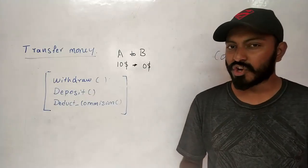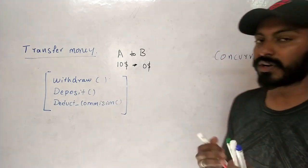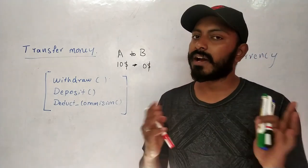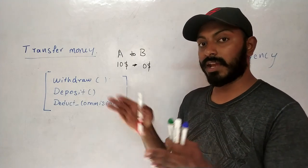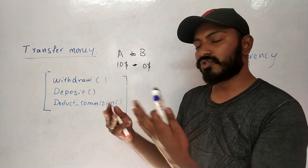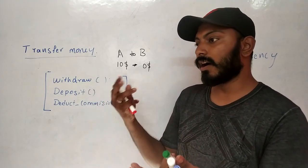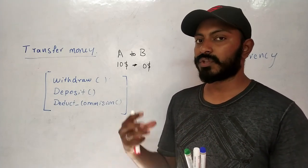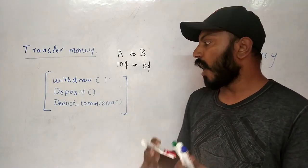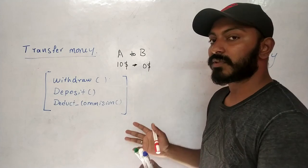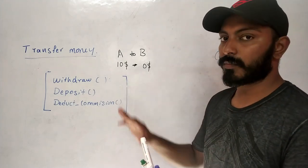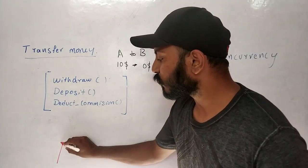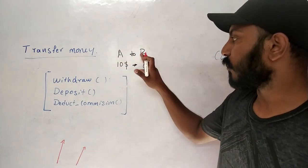What happens when there are concurrent operations on the same account happening at the same time? From the earlier Amazon example, even with two people buying simultaneously, the full $20 should be deducted. Now what happens if we don't use transactions? Consider two operations: A has told to transfer $5 to B, and simultaneously also told to transfer $5 to C.